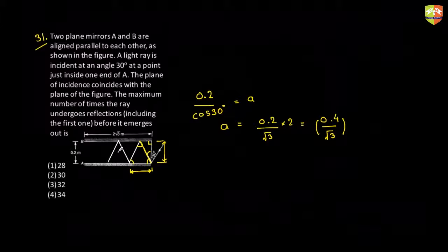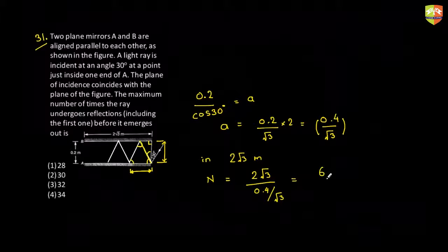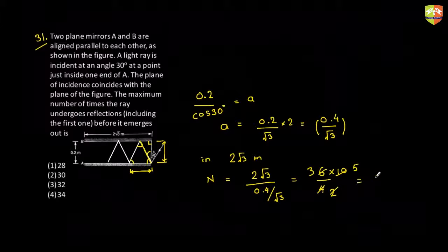Now let's calculate the number of equilateral triangles. In 2√3 meters, the number of equilateral triangles will be equal to 2√3 divided by (0.4 divided by √3). This will be 6 divided by 0.4 — that gives you 15 equilateral triangles.